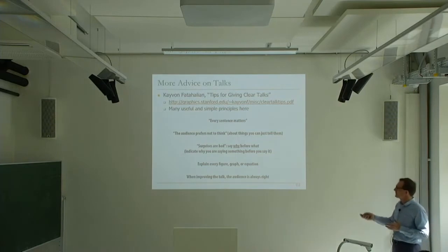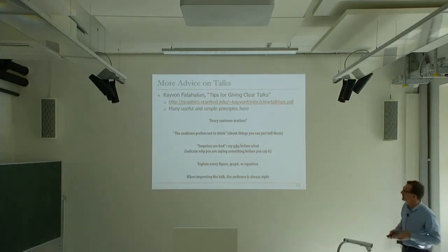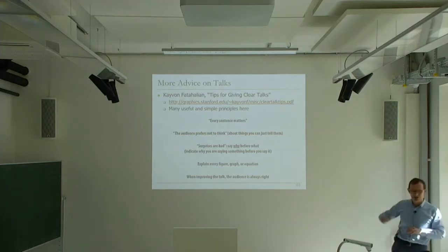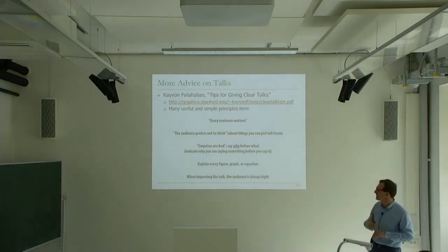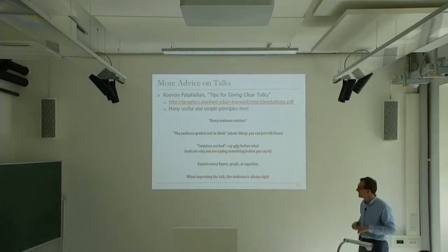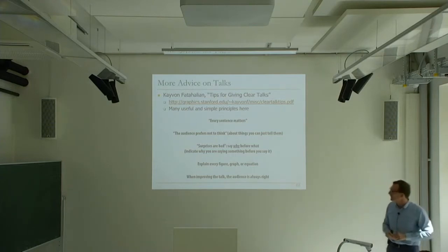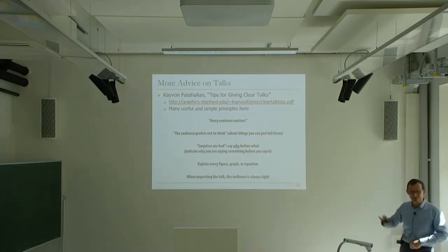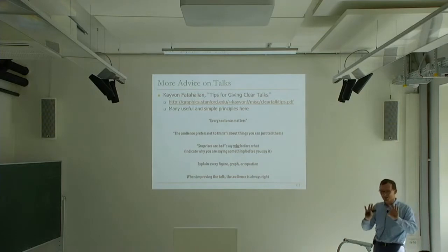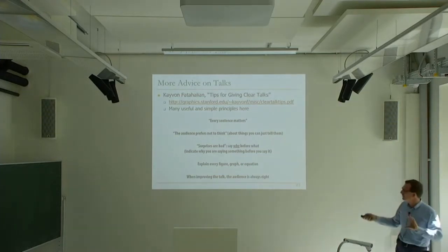Explain every figure, graph, or equation — that's clearly important in writing a paper and giving talks. When improving the talk, the audience is always right — that's mostly true for the review process, assuming the audience is honest. Sometimes the review process can get biased. If the audience is giving you direct feedback in front of you, that's clear. But if they're hiding behind a review process, that may be a little different dynamics.